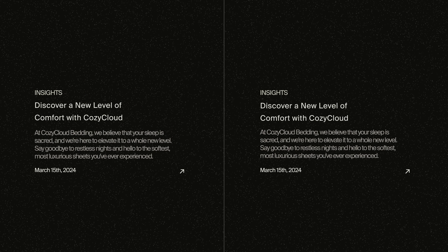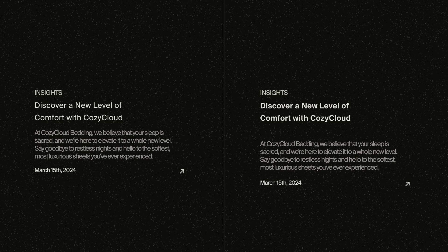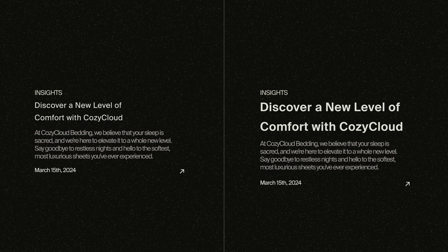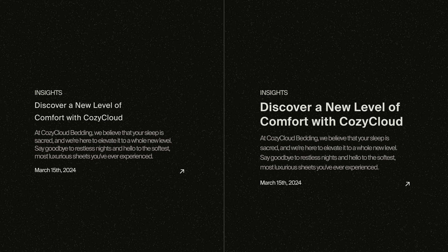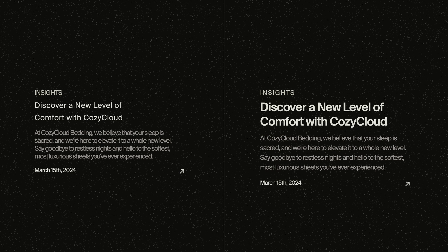Now let's put it all together. Here I have a set of text that could be much improved, especially in terms of visual hierarchy and readability. Let's use the four font settings we just learned to improve the set of text. First, let's improve the font weight to create some visual hierarchy. Then let's change the font sizing to improve the visual hierarchy once again. After that, let's tighten the line height of the heading and widen the leading of the body text to improve readability. And finally, the tracking. After all those simple changes, we now have a set of text that is not only visually aesthetic but extremely readable.